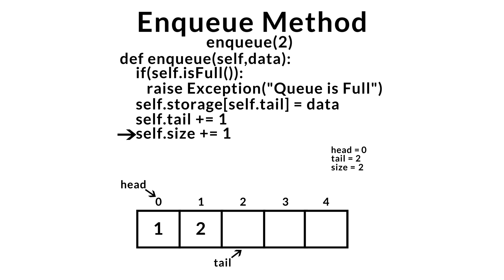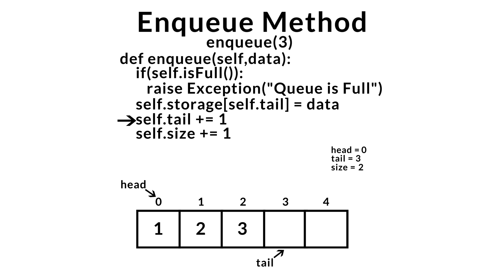For the last NQ example, we enqueue 3 onto the queue. We check if the queue is full — it's not — so we store 3 at the back. We increment the tail index to get the new last position, then increment the size since we successfully added to our queue.